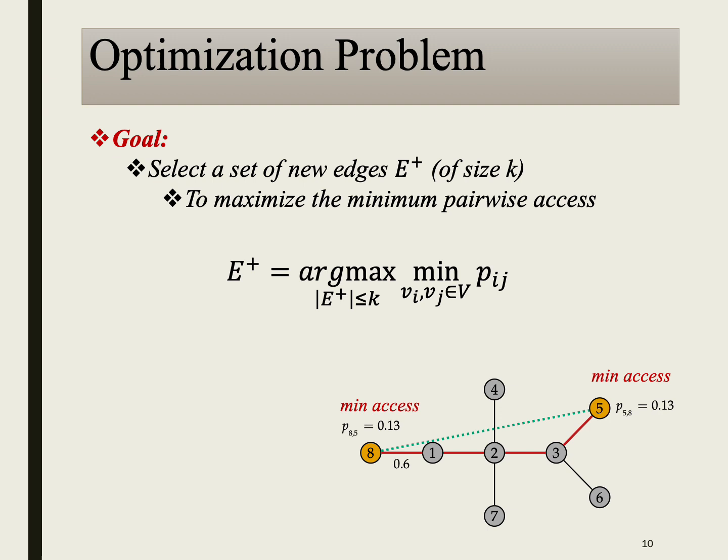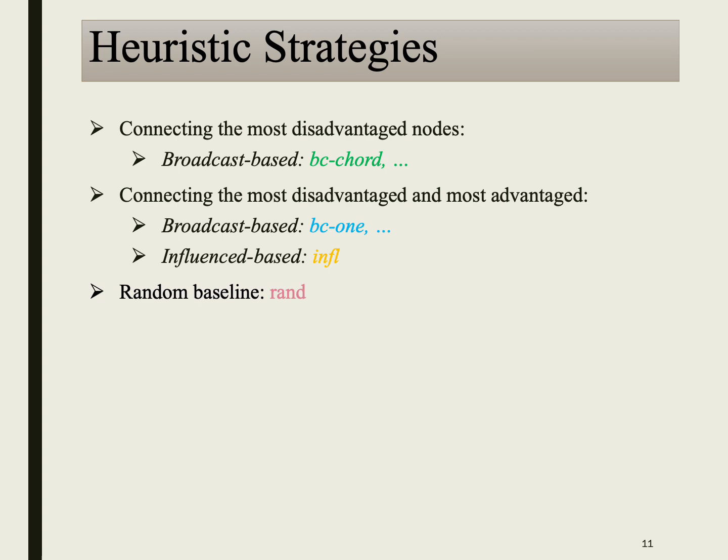Our research explores the discrete optimization problem of maximizing broadcast, aiming to maximize the minimum access between all pairs of nodes. We propose heuristic strategies for selecting edge augmentations. BC chord connects nodes that have the least access to each other. Other heuristics establish connections between the most disadvantaged and most advantaged nodes, determined based on either the broadcast measure (BC1) or the influence measure (Influ). To provide a baseline for comparison, we also include a random heuristic that connects nodes randomly.